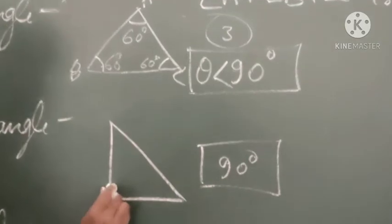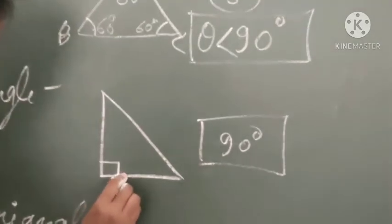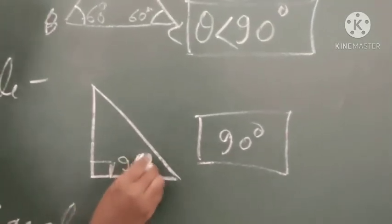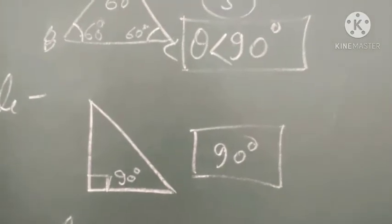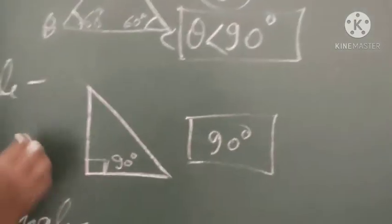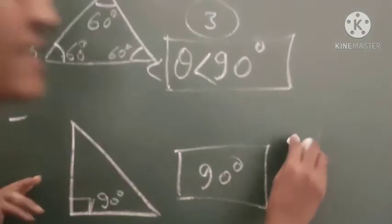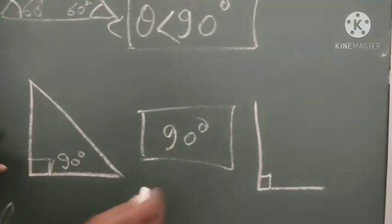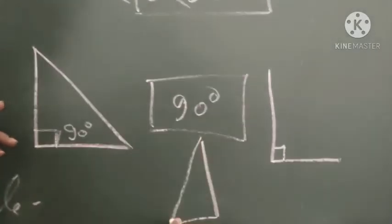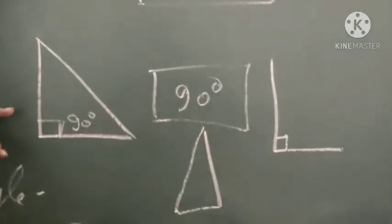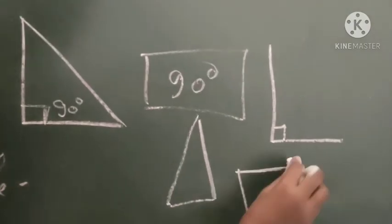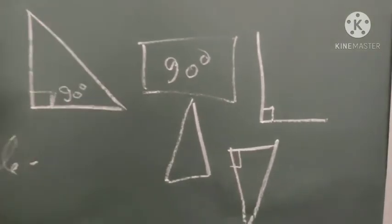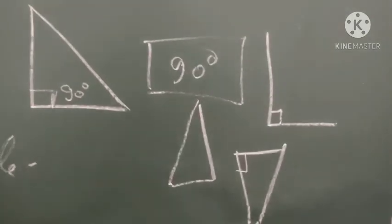In a right triangle, one angle of the triangle must be 90 degrees. A right triangle is easy to identify because two sides are straight, forming a 90-degree angle. Whether positioned like this or like this, it is still a right triangle. This is known as a right triangle.